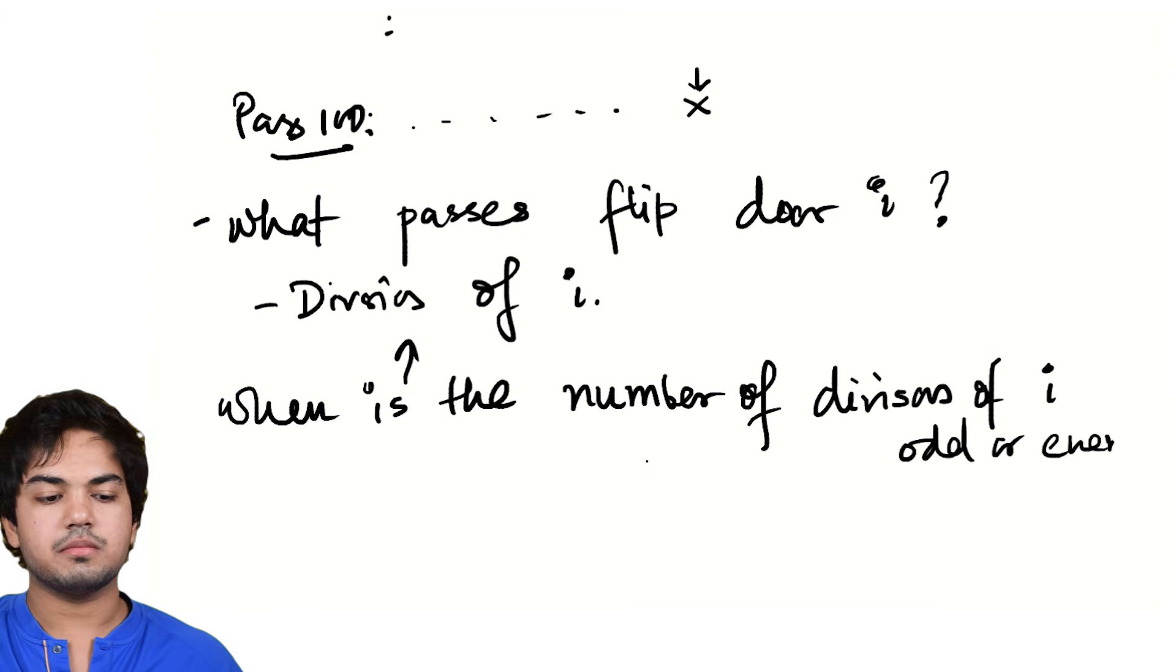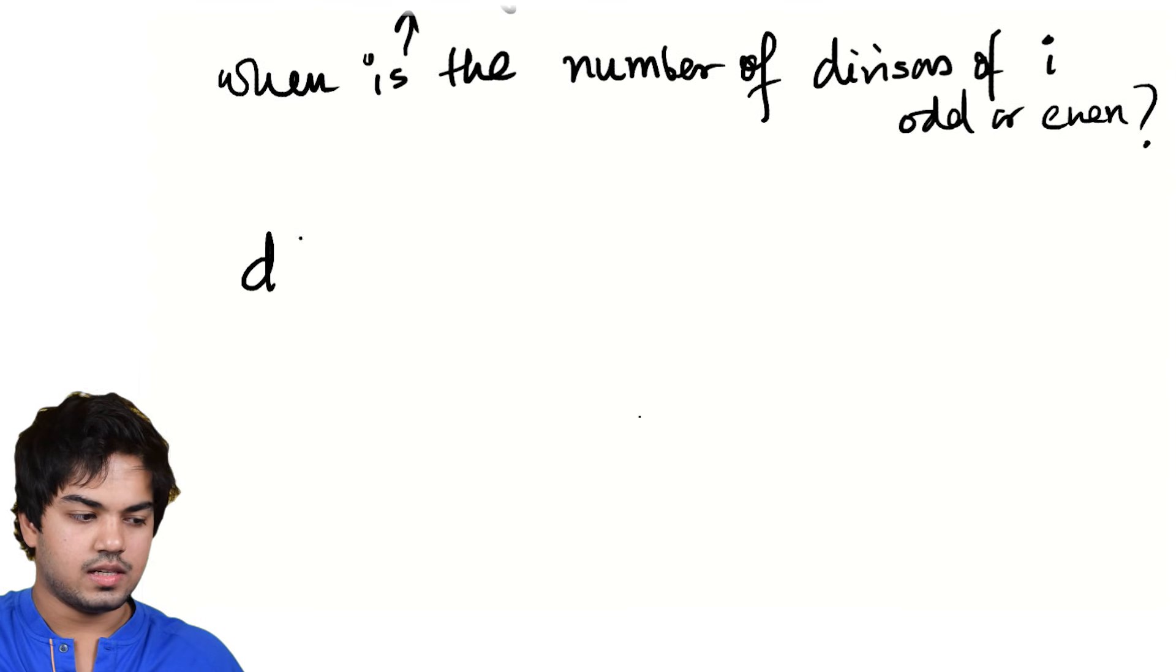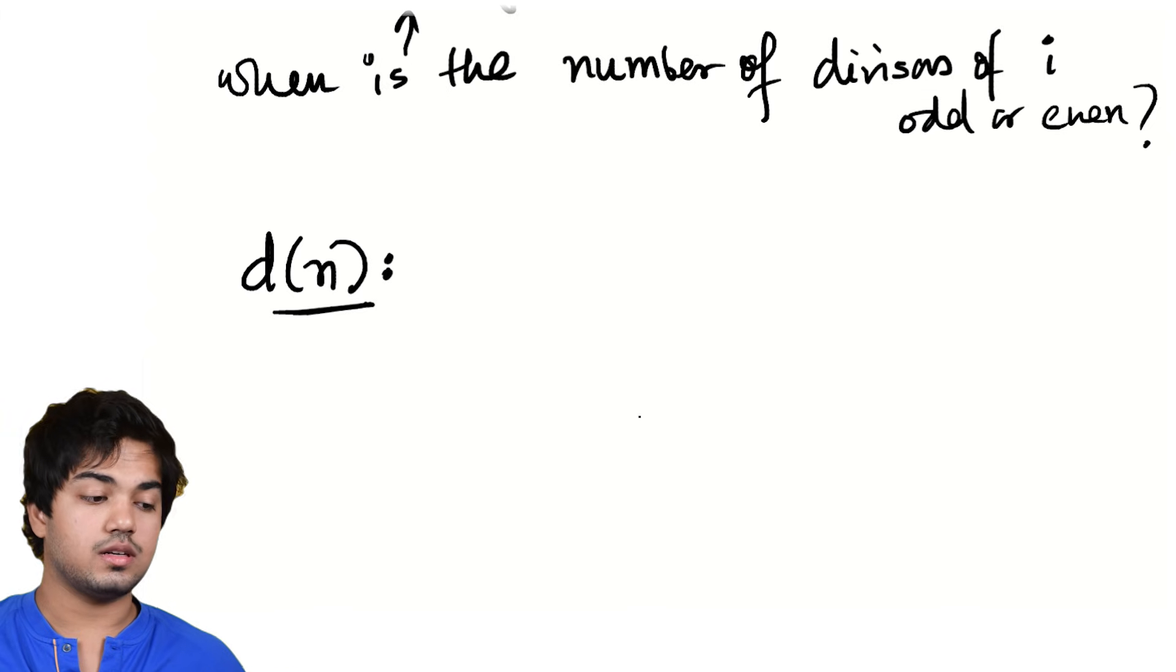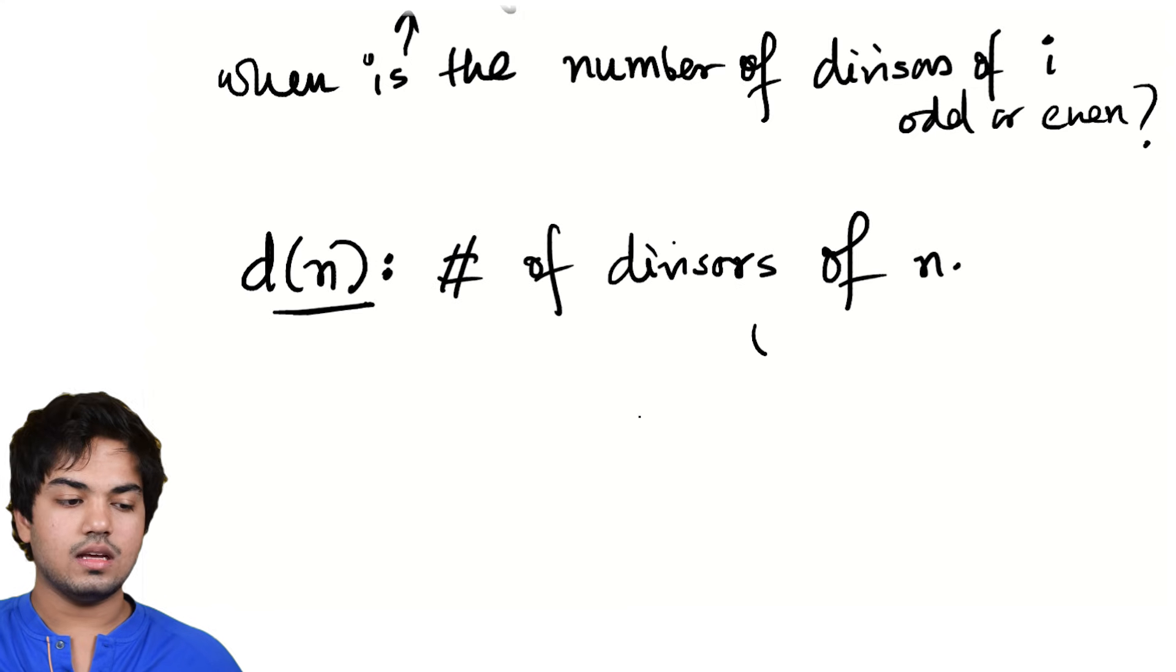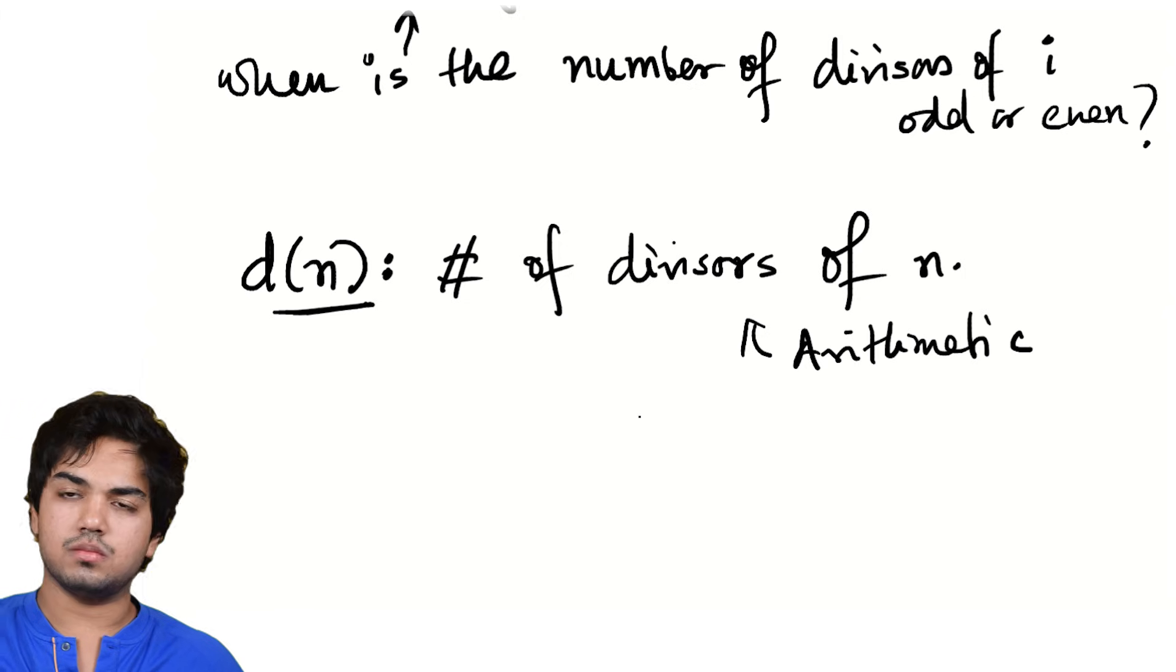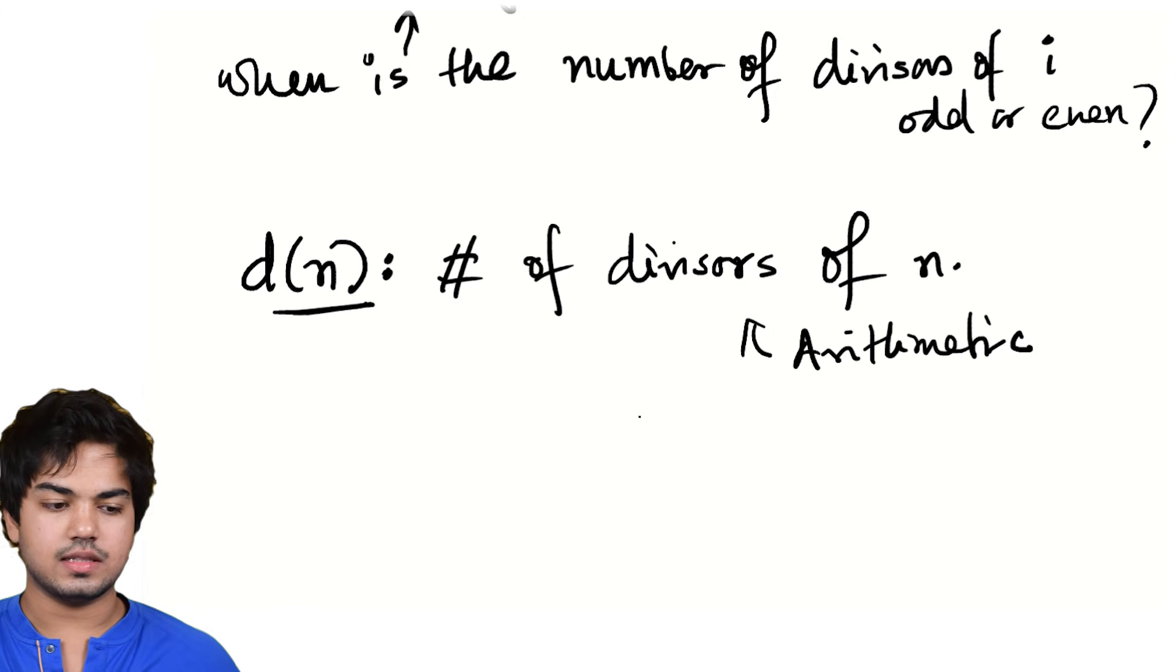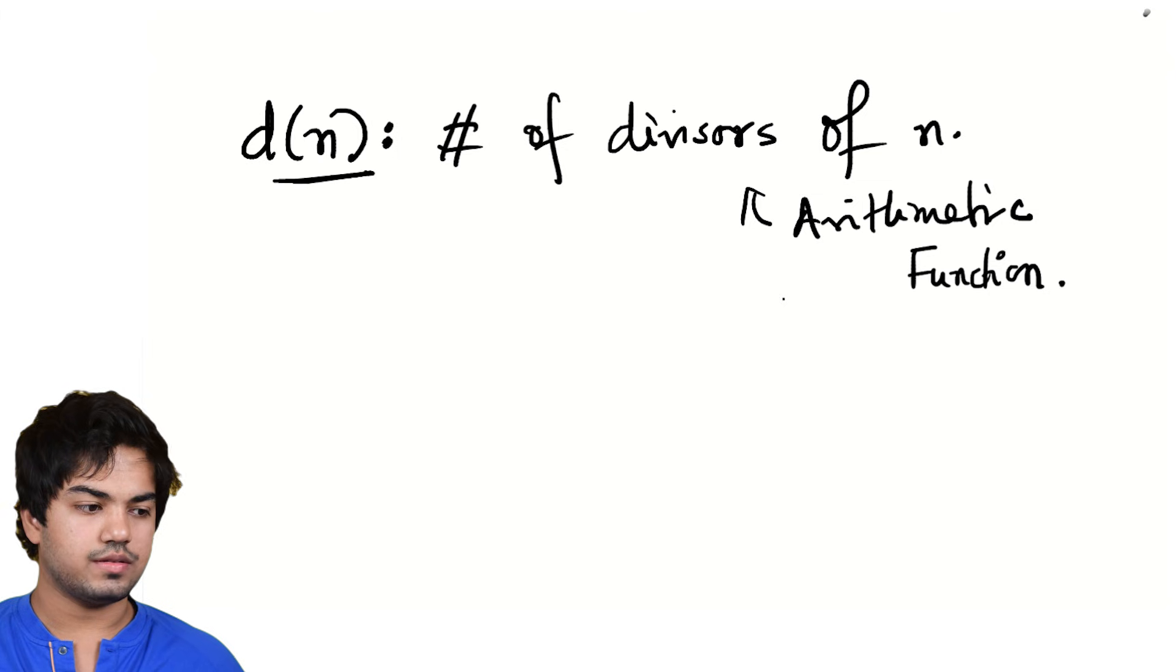When is the number of divisors of i odd or even? That is the question we're asking. Odd or even? And that brings us to the central function that we're talking about, which is written as d(n). d(n) in the context of number theoretic functions is, as you expect, the number of divisors of n. This is an example of an arithmetic function. Arithmetic functions map the natural numbers onto the real or sometimes the complex numbers and are usually of some inherent number theoretic interest. So we want to investigate this number d(n).